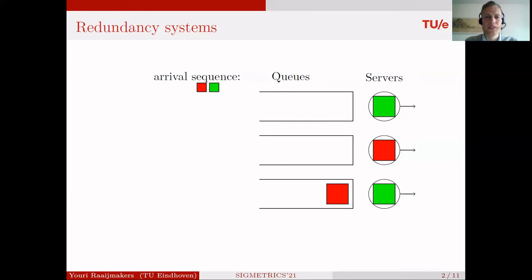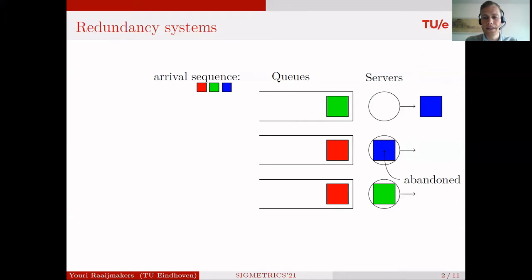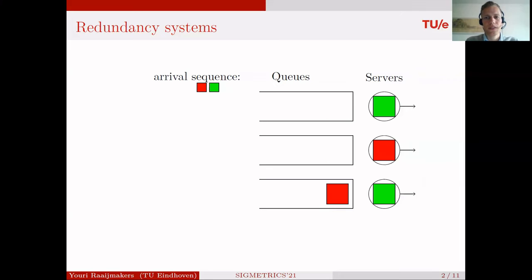It may even happen that these replicas have different starting times. For example, the bottom server is already working on a green replica. When the blue job departs, the top server is serving the green replica — so they started at different times.